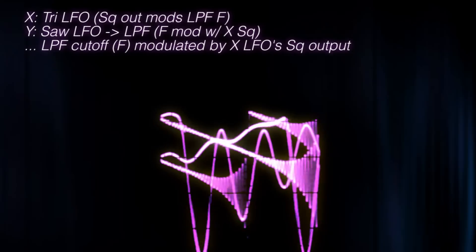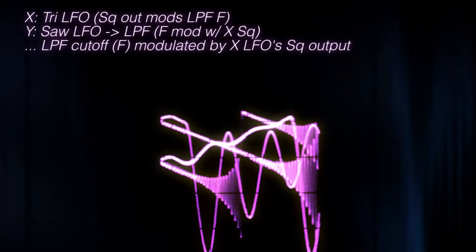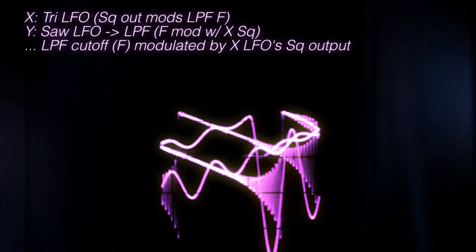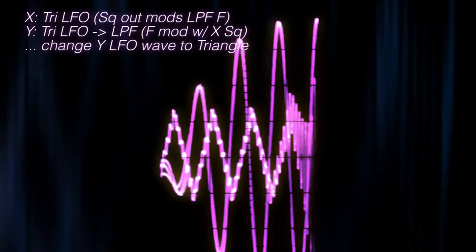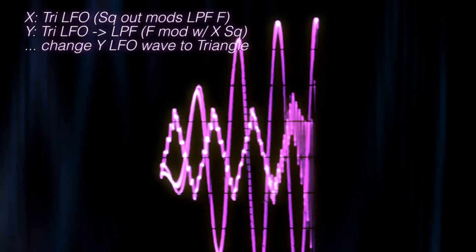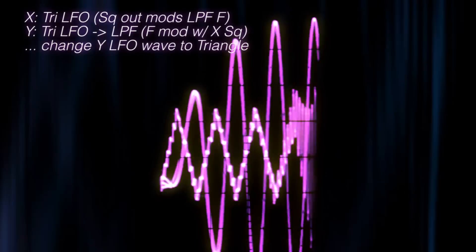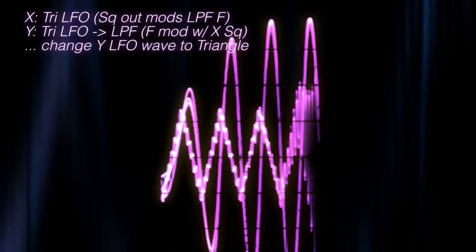Now I use the X LFO's square wave output to modulate the filter's cutoff frequency. And now I change the Y LFO's shape from sawtooth back to triangle.